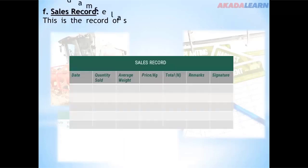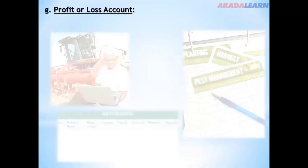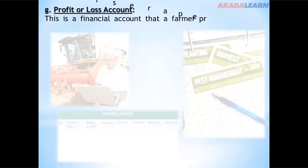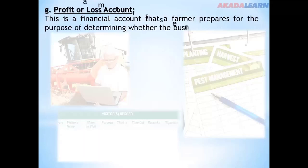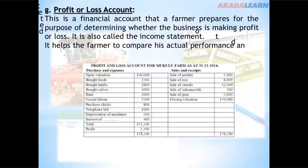Sales record: this is the record of sales made by the farmer on a daily, weekly, or monthly basis. Profit or loss account is a financial account that a farmer prepares for the purpose of determining whether the business is making profit or loss — also called the income statement. It helps the farmer to compare his actual performance and to detect lapses.